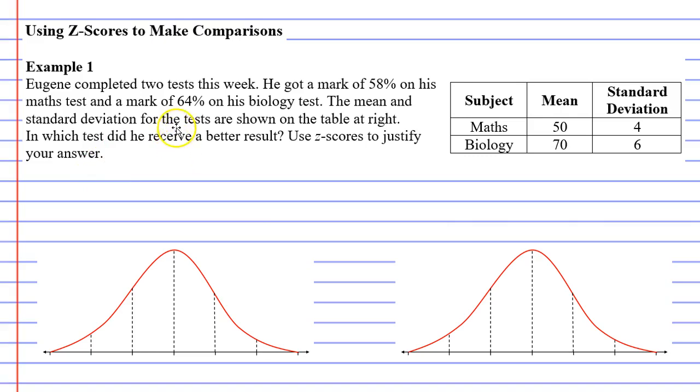Now a lot of people make the mistake of thinking the higher mark is the better result. 64% is higher than 58%, so Eugene did better in his biology test. But that isn't true, because the biology test might have been an easier test than the maths test. There's other factors here at play.